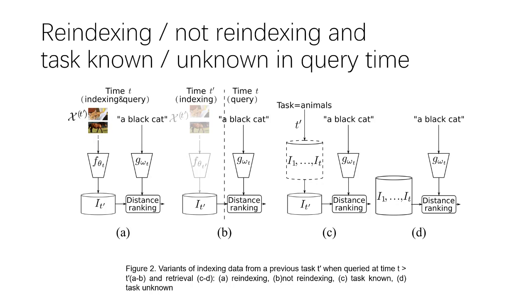Re-indexing means that we need to store the features once again from the previous tasks. Not re-indexing means that after learning the previous task, we store all the image and text features for further use. For task known and unknown, it means whether we know the task oracle at test time. If we know the task ID, we can go directly to the storage of that task to further speed up the query.